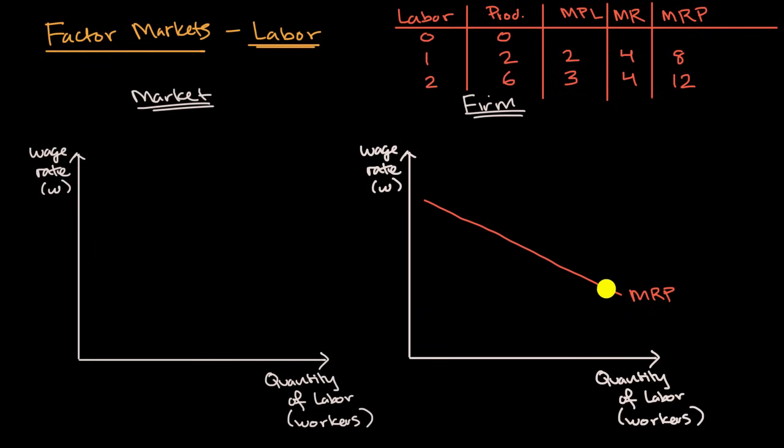Now, how would this look at the market? Well, what you could do is you could add up all the marginal revenue products from all the firms in the market, and if you add them up, you're going to get a market labor demand curve. If you add all of these up, you are going to get something like this. That is the market labor demand curve.